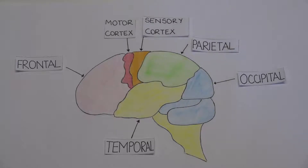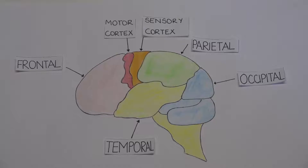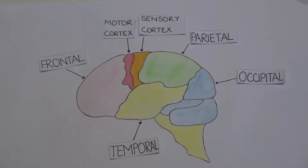The frontal, parietal, temporal and occipital lobes can be seen easily because they are located in the cortex, whereas the central and limbic lobes are located in the deep nuclei of the brain. The cerebral hemispheres have gyri and sulci and are connected by the corpus callosum, which is a band of nerve fibres.